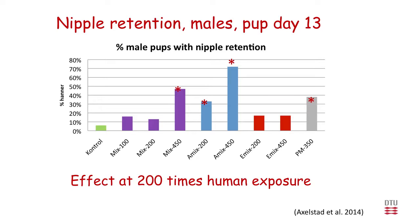For the total mixture, sperm count appeared decreased, but p-values were between 6 and 8 percent — formally not statistically significant. Our conclusion is that we do see lower sperm count at 200 and 450 times human exposure, and there may also be something going on at 100 times human exposure.